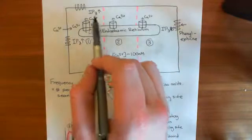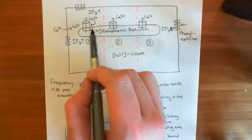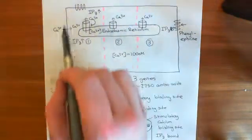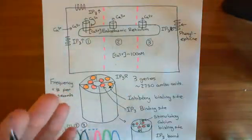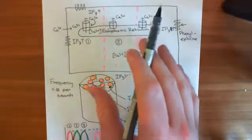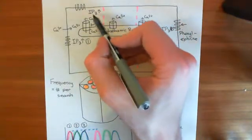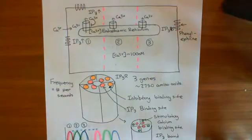It must mean that not all of the IP3 receptors are completely occupied by IP3 — the IP3 must be falling off. And if you've got a higher concentration of IP3, that must somehow result in the IP3 coming back on quicker. So something about my explanation is lacking, because it doesn't explain how increases in IP3 level cause an increase in the frequency with which these calcium waves are occurring in the cytoplasm of these hepatocytes.